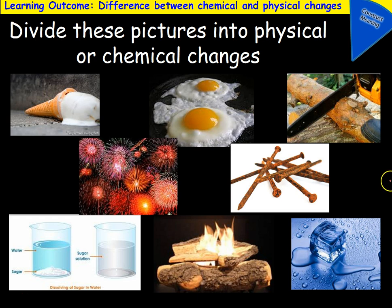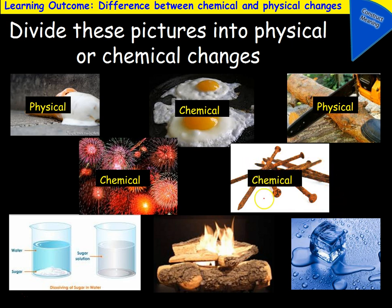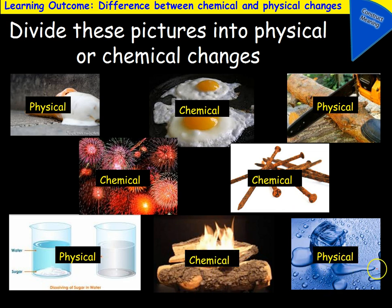Here are some examples — think about which are chemical and which are physical changes. An ice cream melting is a physical change — it's a change of state. Protein molecules in the egg changing shape is a chemical change because you can't turn the cooked egg back. Fireworks — chemical reaction. Rusting — another chemical reaction. Sugar dissolving — physical change. Combustion — chemical. And lastly, ice melting — physical.